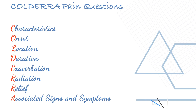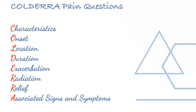Pain can be assessed using the COLDERRA mnemonic: Character, Onset, Location, Duration, Exacerbation, Radiation, Relief, and Associated symptoms. This mnemonic can be used to assess any pain in any scenario or history taking.